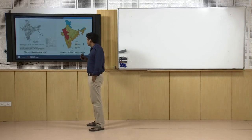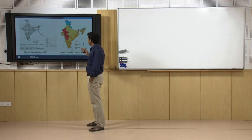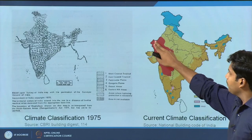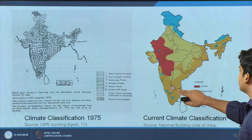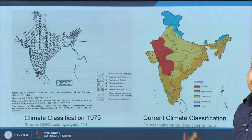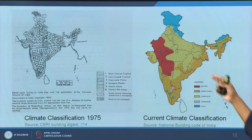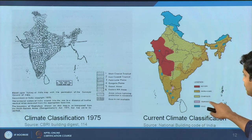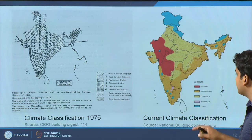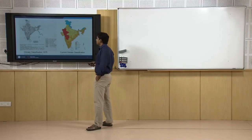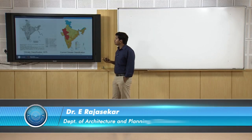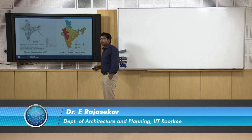Later, the National Building Code was revised and climatic classification was also revised as part of it. Now we officially have five climate zones: hot and dry — Rajasthan and that belt; warm and humid — most of the coastal peninsular area; composite climate — which takes around 30 percent, one-third of Indian geography; temperate or moderate climate — small patches; and cold climates in Kashmir and the far northeastern region.